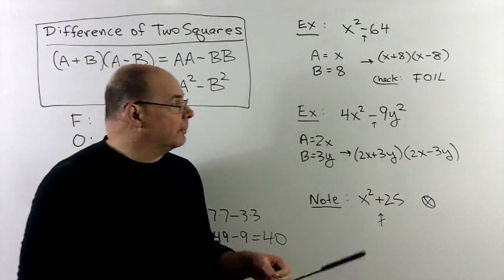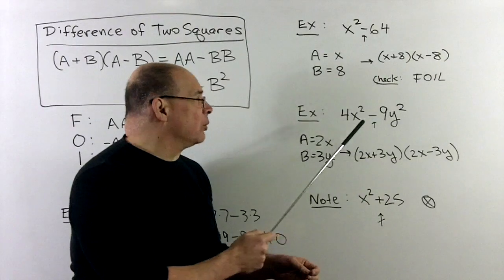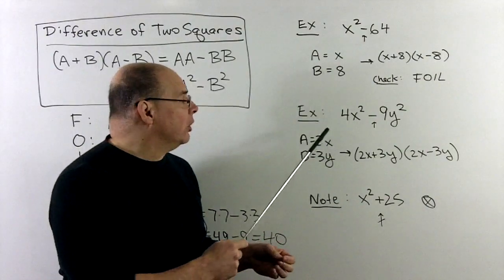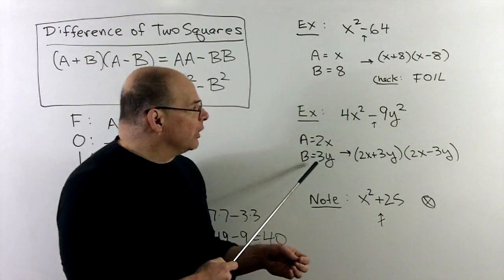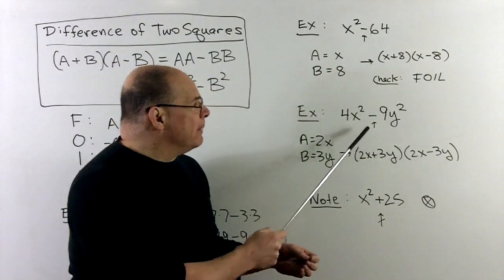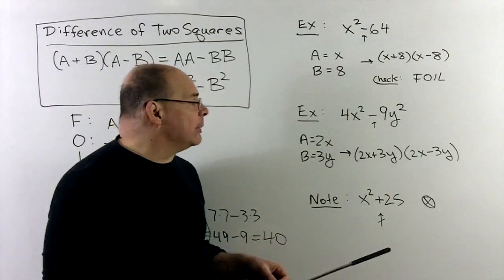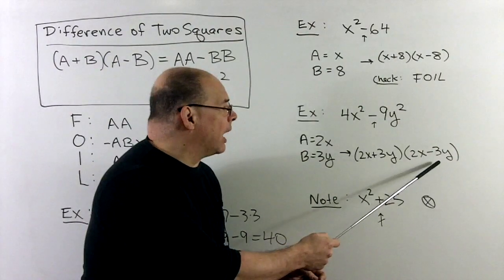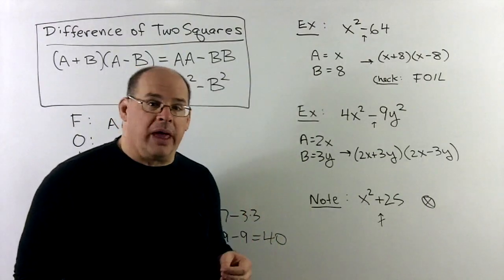Let's try another one: 4x² − 9y². Here we have x and y — not a problem as long as we have squares. What squares up to 4x²? That's 2x. And 3y squares up to 9y². We have the minus sign in the middle, so we drop things into the formula to get (2x + 3y)(2x − 3y). You should check that by FOILing.